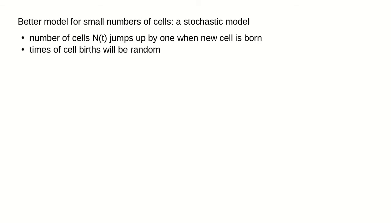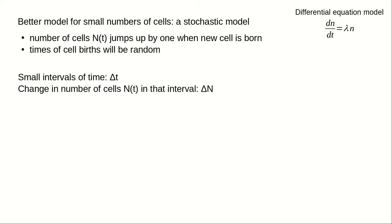In this stochastic model, we'll use capital letters for the random quantities, and let capital N of t be the number of cells at time t. The number of cells will always be an integer, and will jump up by 1 at the random times when a new cell is born. To derive this stochastic model, first recall the differential equation model, where dn/dt equals lambda times n. Let's create a stochastic version of this growth model.